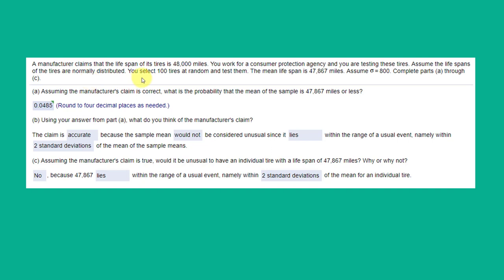You work for a consumer protection agency, and you're testing the tires. You're told to assume the lifespan of the tires are normally distributed, that means the population is normally distributed. You take a sample of a hundred randomly and you test them. You get a mean lifespan of 47,867.